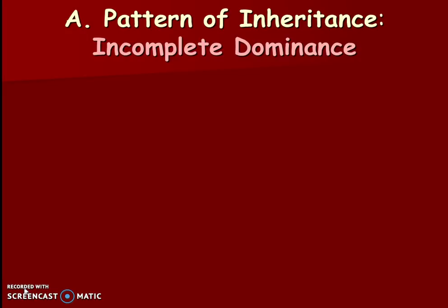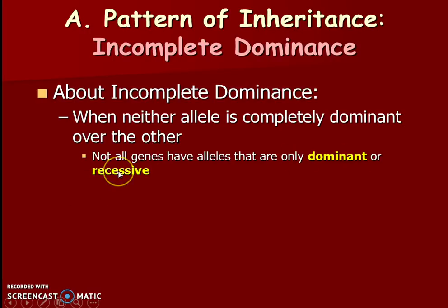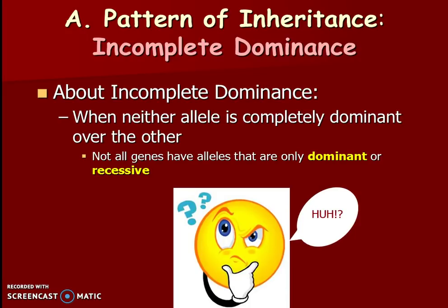Our first pattern of inheritance called non-Mendelian is this new term which you should make sure you bold or highlight in your notes: incomplete dominance. Incomplete dominance is when neither allele is completely dominant over the other. Not all genes have alleles that are only dominant or recessive — it's not dominant, it's not recessive, which is pretty bizarre. That's why we call it incomplete dominance.